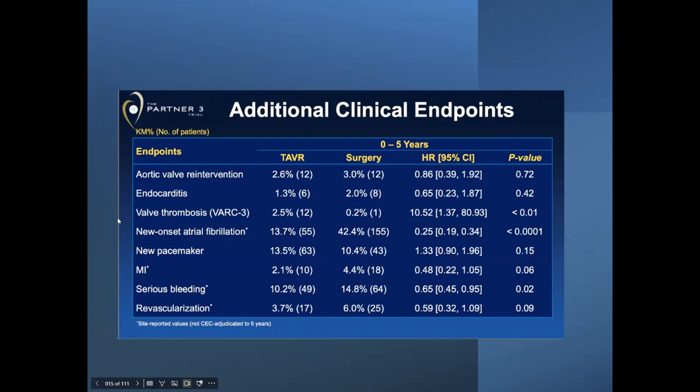In terms of additional clinical endpoints from PARTNER 3: aortic valve re-intervention shows no difference between groups; endocarditis shows no difference. Valve thrombosis is still an issue in TAVR patients. AFib is more common in the surgery group. New pacemaker is slightly more — but not significantly — in the TAVR group. No difference in MR. More serious bleeding for surgery. No difference in reverse remodeling between both groups.